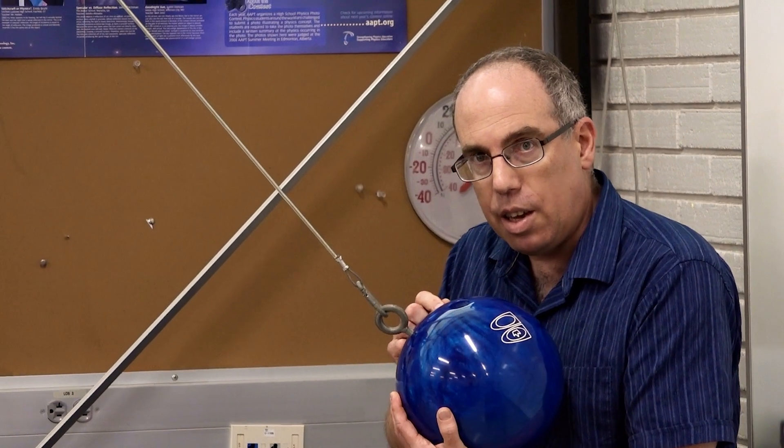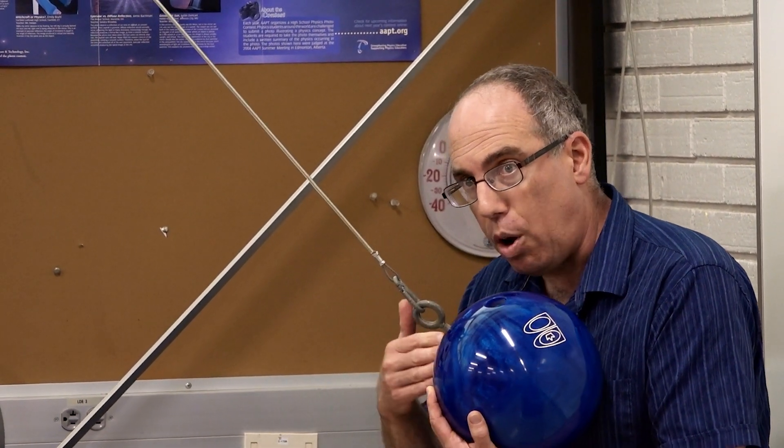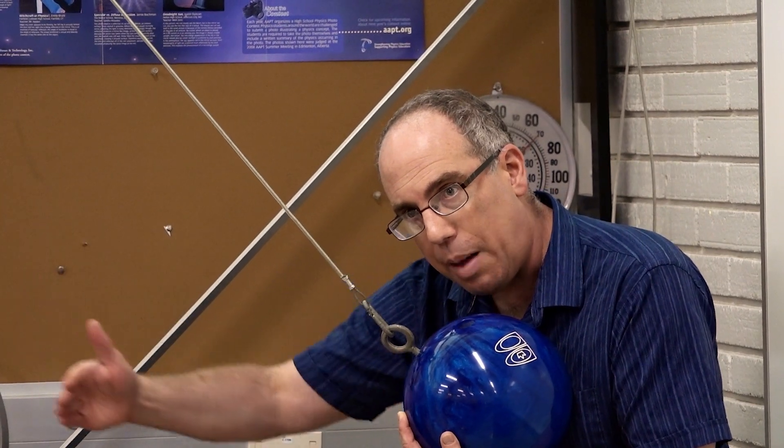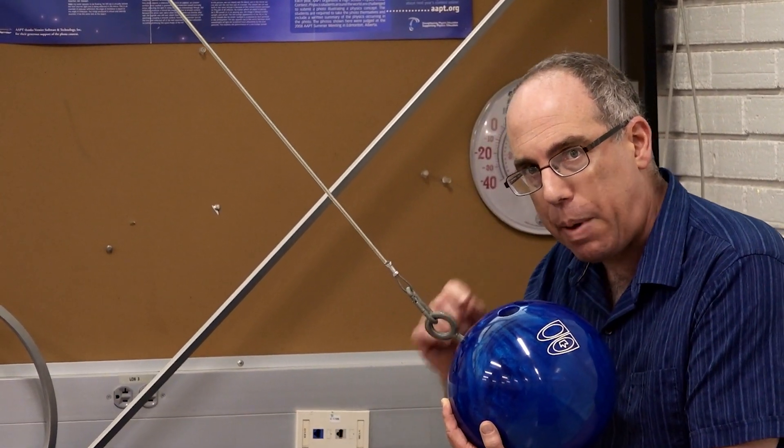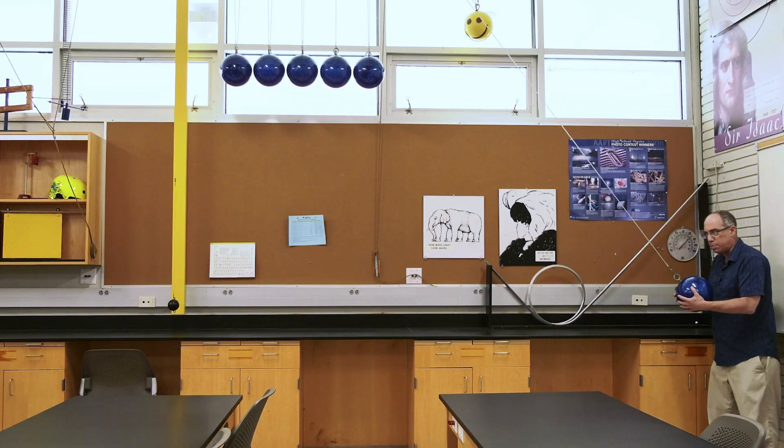On the other hand, if the gravitational force is non-conservative, the bowling ball will either not make it all the way back or make it back to my chin with a bit of extra kinetic energy. So let's do the experiment.